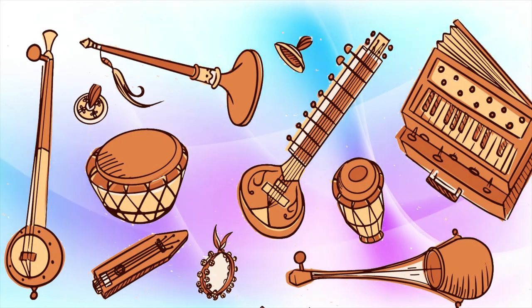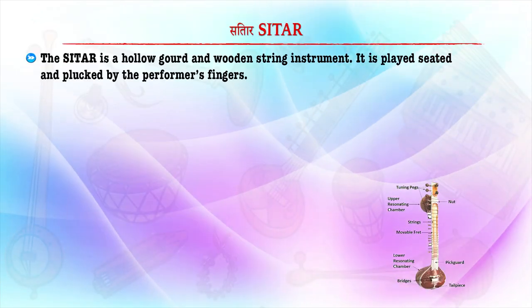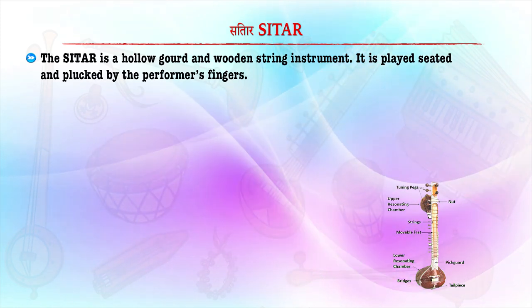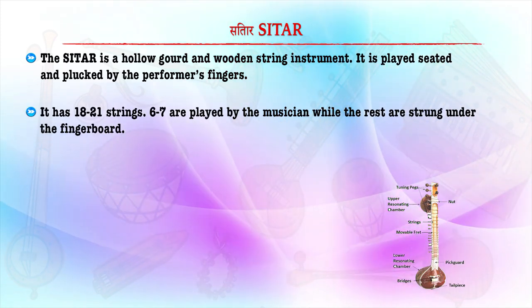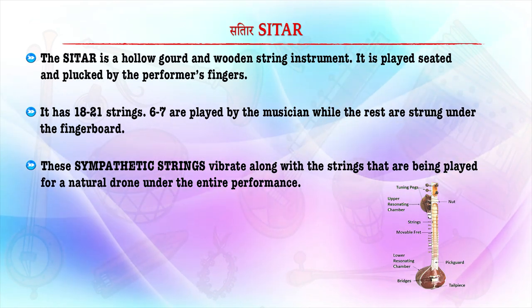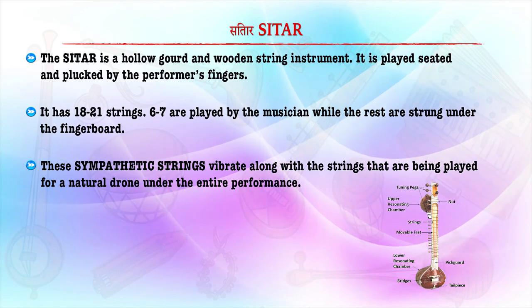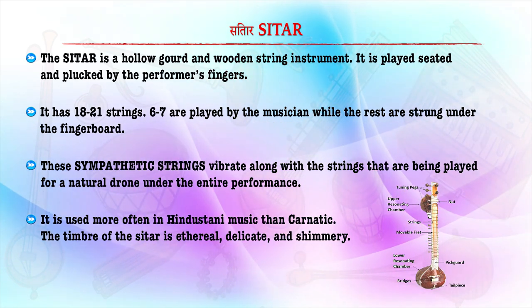We have specific classical musical instruments associated with various regions of India. The sitar is a hollow, gourd-shaped wooden string instrument. It is played seated and plucked by the performer's finger. It has 18 to 21 strings: 6 to 7 are played by the musician while the rest are situated under the fretboard. These sympathetic strings vibrate along with the strings being played, creating a natural drone under the entire performance. The sitar is used more often in Hindustani music than in Karnatic music.